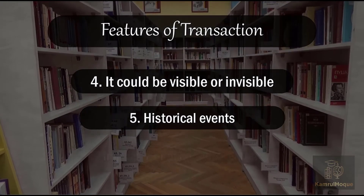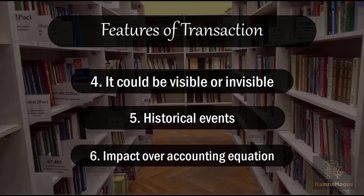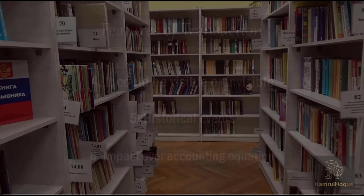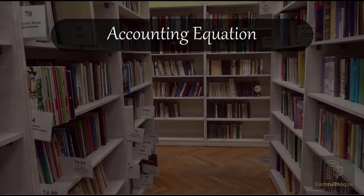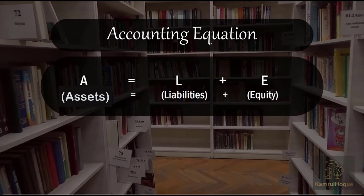Number five — historical events. Transactions are recorded based on historical events. Now let's look at the impact on the accounting equation. The accounting equation is: Assets equals Liabilities plus Equity, shortcut: A = L + E.